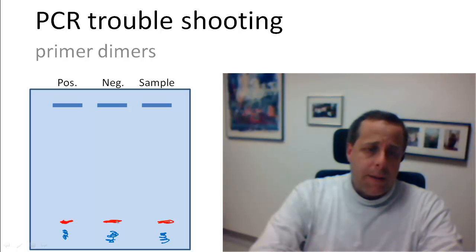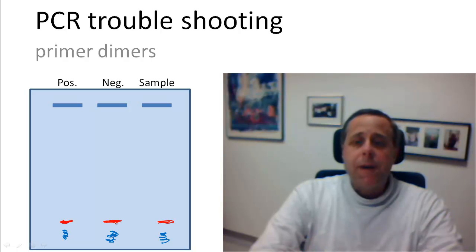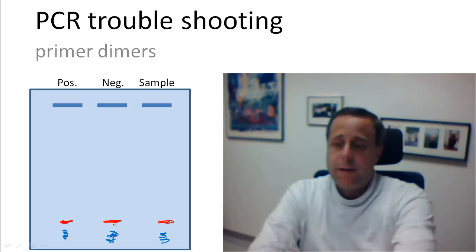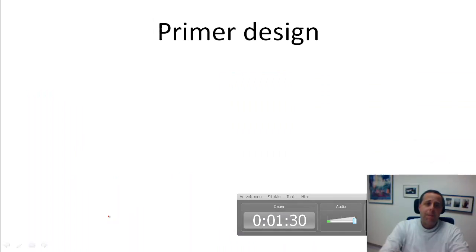That's the primer dimers that are forming as a result of primers that would be annealing to each other and that will compete with the amplification of the template DNA that you actually mean, and that's why you are having trouble. So let's have a look at what can happen.